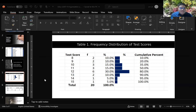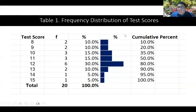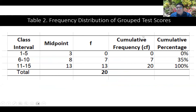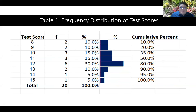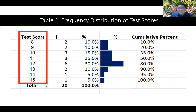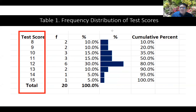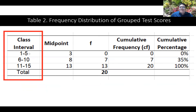Now let's talk about the frequency distribution table for grouped data. The ungrouped FDT lists raw scores — 8, 9, 10, 11, 12, 13, 14, and 15. Another way to present it is as a frequency distribution table of grouped data. Instead of individual raw scores, what is listed are class intervals: 1 to 5, 6 to 10, and 11 to 15.